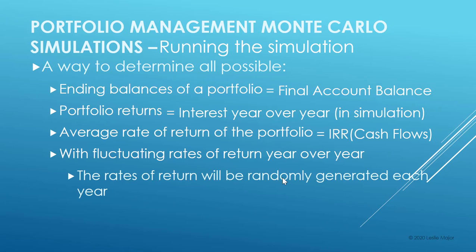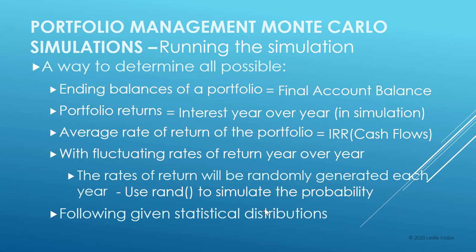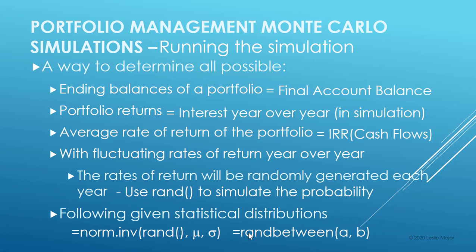We're going to generate random rates of return using the RAND function to simulate our probability, then feed it into whichever distribution we think our rates tend to follow. If it's a normal distribution, we feed that RAND into norm.inv. If it's uniform, we use RAND between lower and upper limits. That pretty much sums up what Monte Carlo simulation is, and we're going to jump into an actual example in the next video.